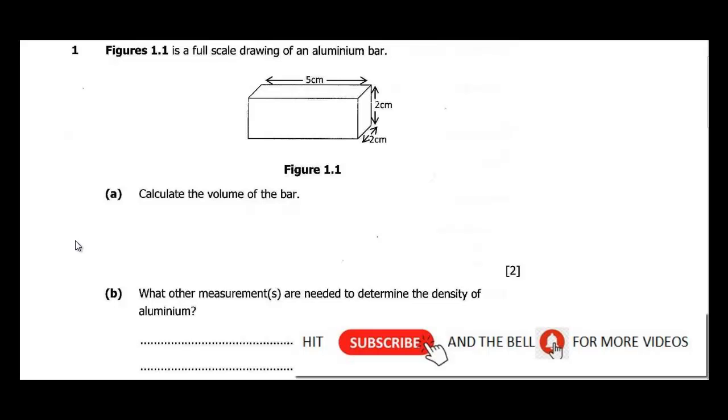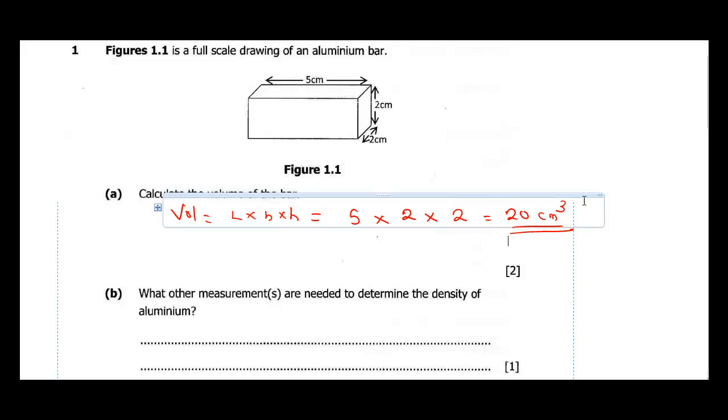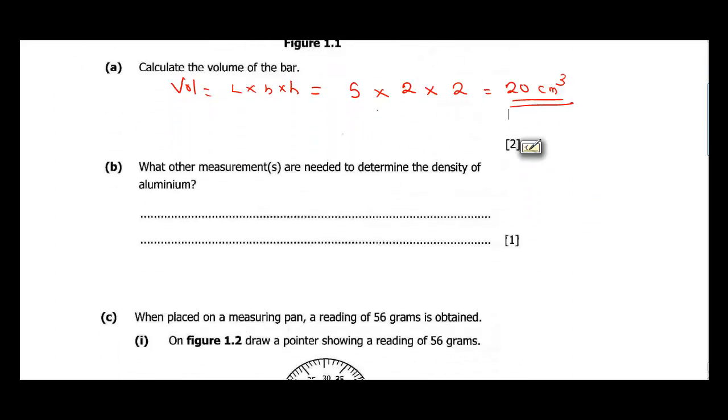Part A says calculate the volume of the bar. To calculate volume of a cuboid, the volume is length times breadth times height. So here our length is 5 cm, our breadth is 2 cm, and our height is 2 cm. So this is 5 times 2 times 2, which gives us 20 cm cube. That's the final answer for the volume of the bar.